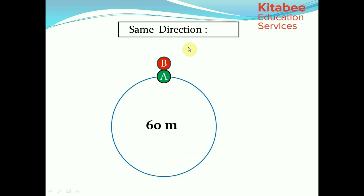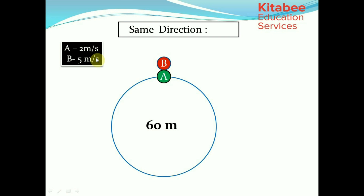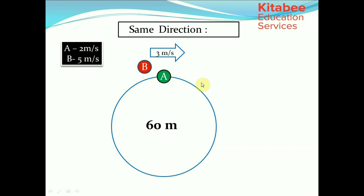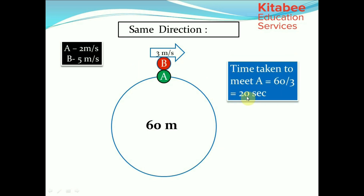Now let's look at the case where two runners run in the same direction. The track length is 60 meters, speed of A is 2 meters per second and B is 5 meters per second. For the relative speed, we keep A at rest, which means B's effective speed becomes 5 minus 2 equals 3 meters per second. Time taken for B to meet A is 60 divided by 3, which equals 20 seconds. So B meets A at an interval of 20 seconds.